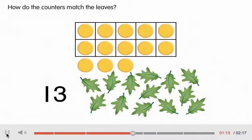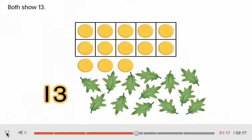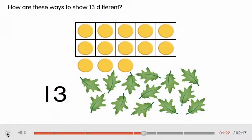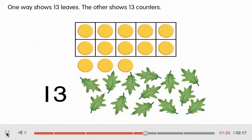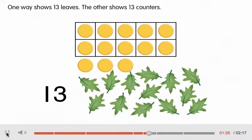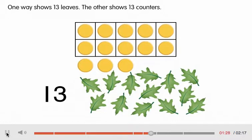How do the counters match the leaves? Both show 13. How are these ways to show 13 different? One way shows 13 leaves. The other shows 13 counters.